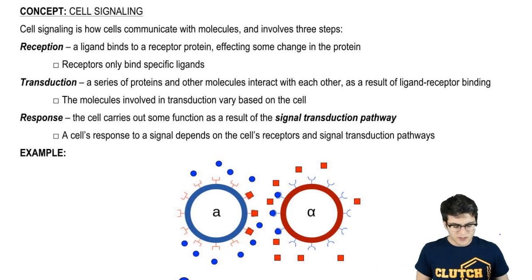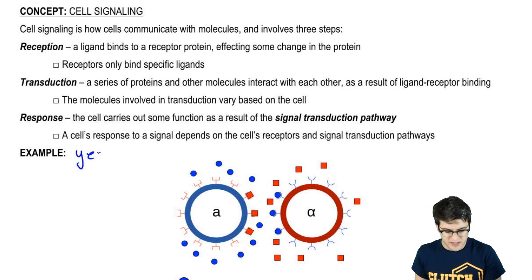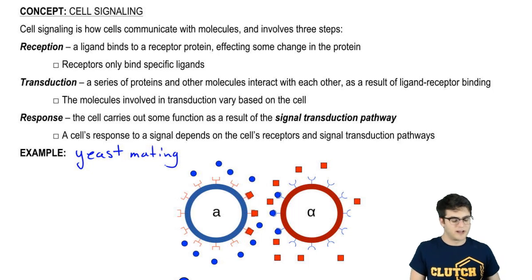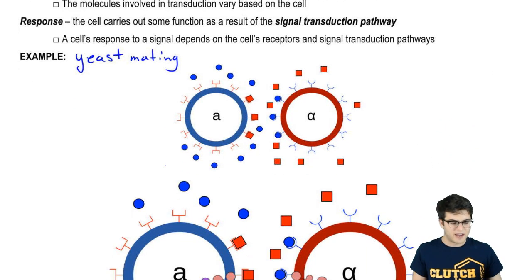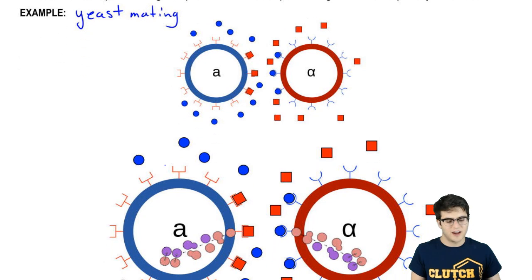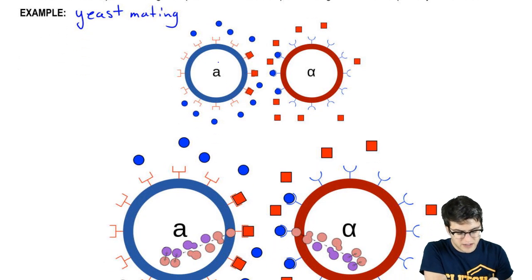Now, to look at an example of this, let's consider yeast mating. Yeast are single-celled eukaryotes, and it turns out that they have two mating types. You could almost think of it like men and women in humans. So, they have the mating type called A, and the mating type called alpha.